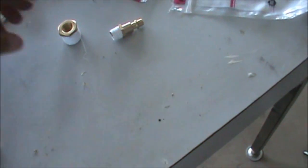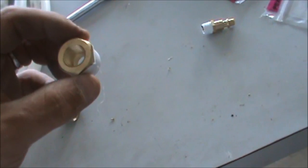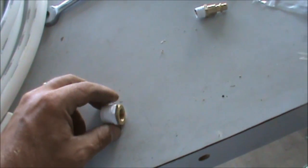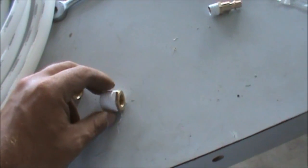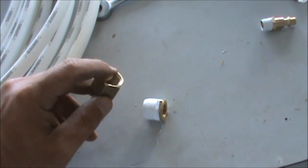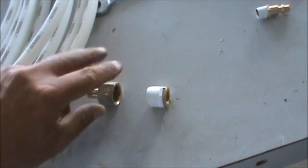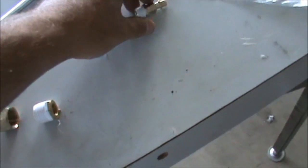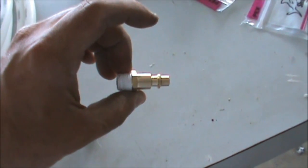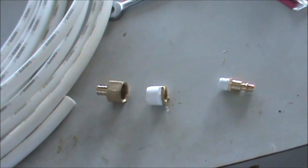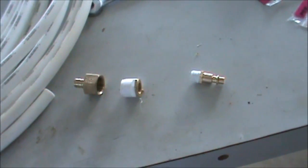And this thing here is basically an adapter. It goes from three-eighths of an inch, this is three-eighths here and so is that, and it goes down to quarter inch which is going to be what your air compressor fitting is. I've already put Teflon tape on these pieces so we're going to tighten them up and put them together.